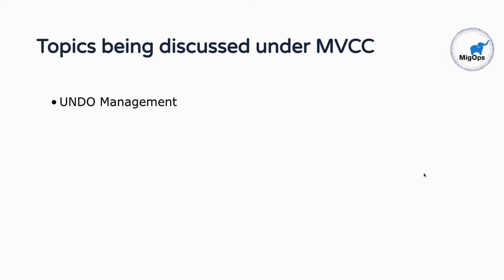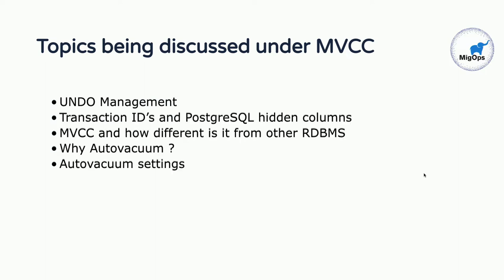Let me go through the topics we're discussing today. We're going to talk about undo management in Postgres, transaction IDs, and some Postgres system columns. How is it different from other relational databases? Why do we need auto-vacuum? And definitely about auto-vacuum settings, internals, and tuning auto-vacuum.